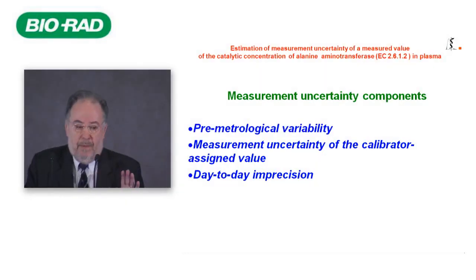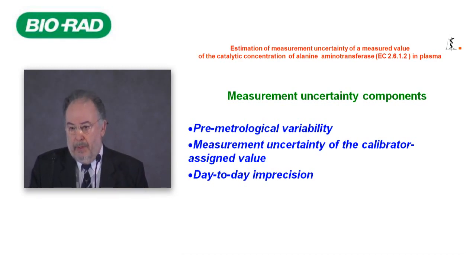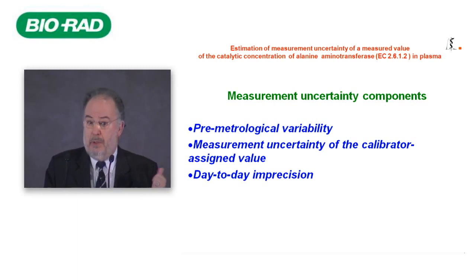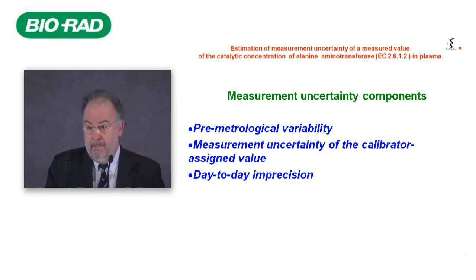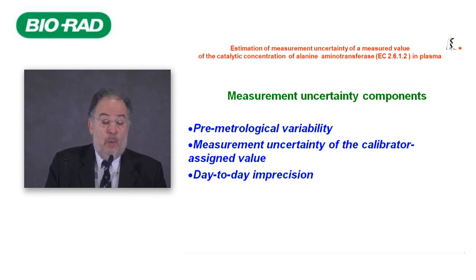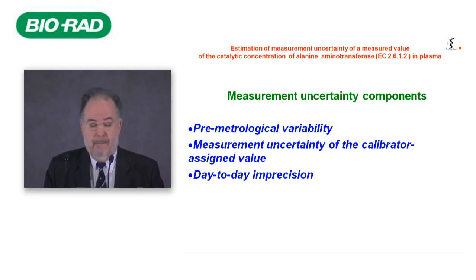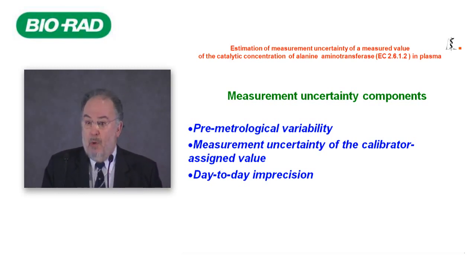After describing the measuring system, we must consider the different sources of uncertainty that can affect the measured value. Among others, the most important are: pre-analytical or pre-examination variability; the measurement uncertainty of the calibrator's assigned value; and finally, generally the most important source of uncertainty — the day-to-day imprecision.